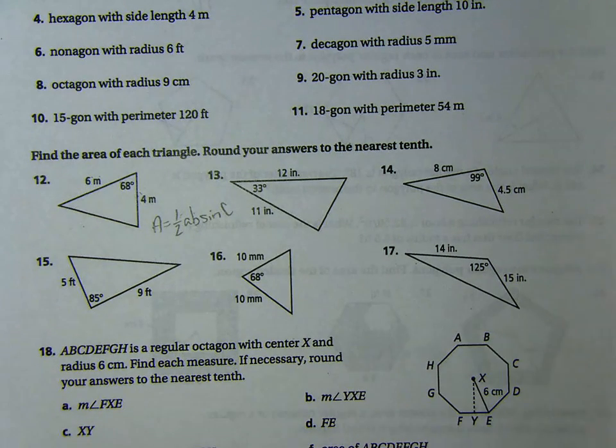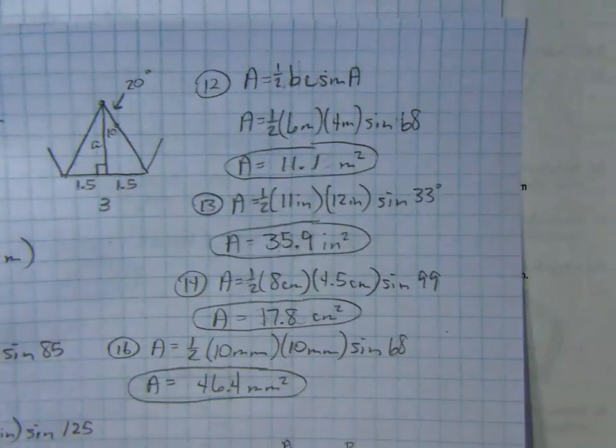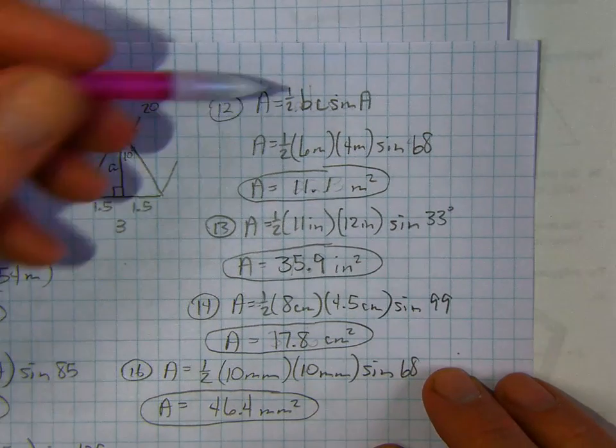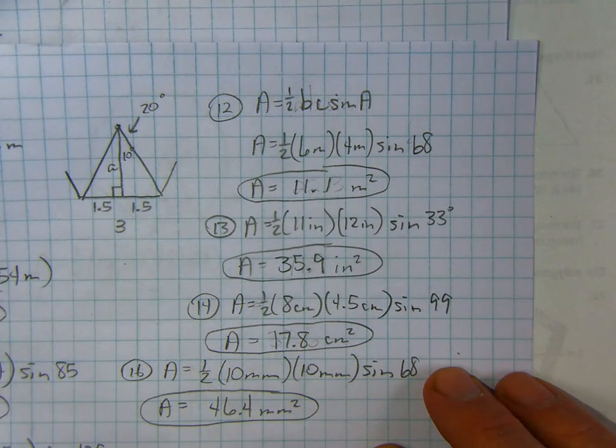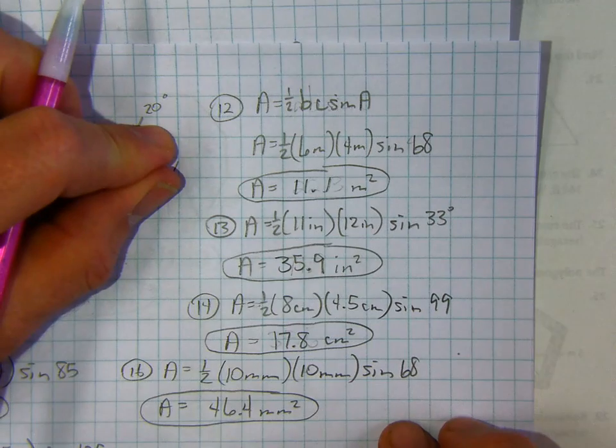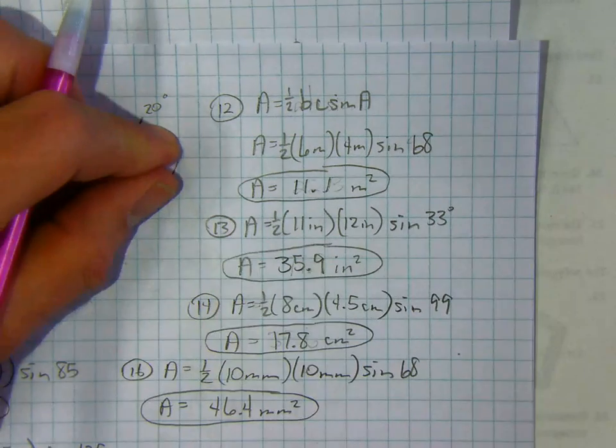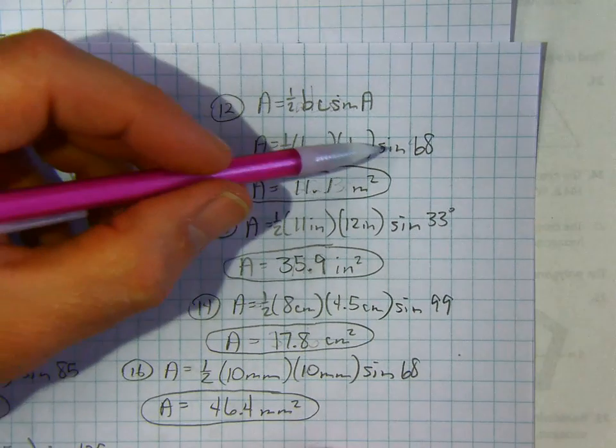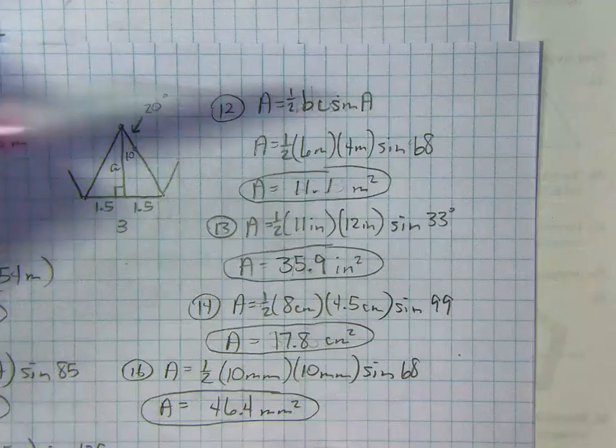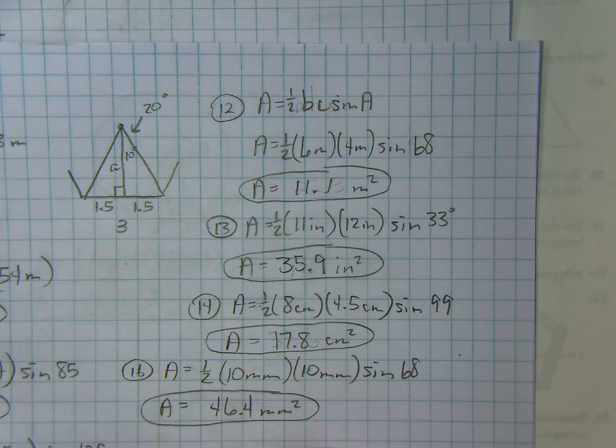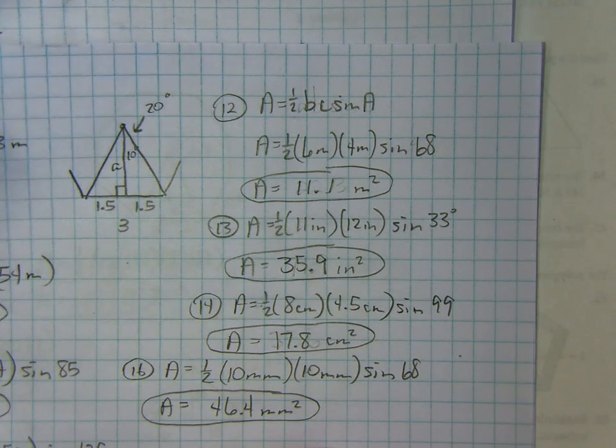And that's a real simple process, too. Let's see if I have one of those worked out. I'll just show you real quick. Yeah, I did. Number 12. This is what I did on number 12. I put B, C, sine A because I think that's the formula that they used. This picture has nothing to do with number 12. So it was 1 half of 6 meters times 4 meters times the sine of 68. Punch all that in your calculator and you get 11.1 meters squared. So those are really simple problems, these here.